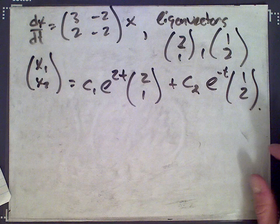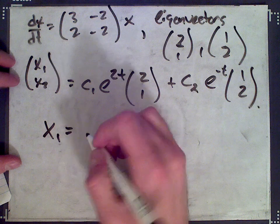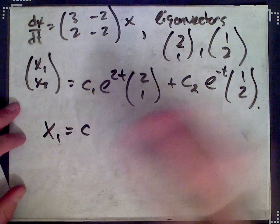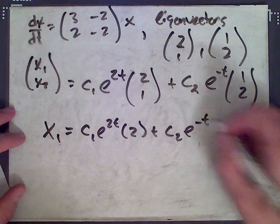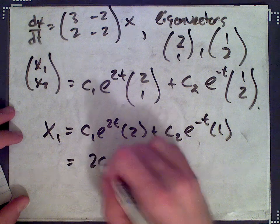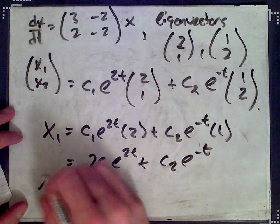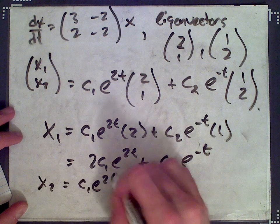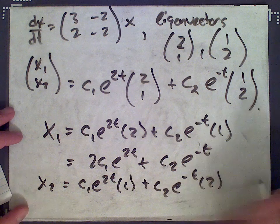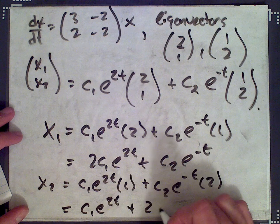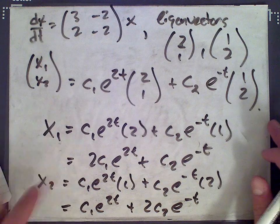Breaking the solution into components: x₁ = 2c₁e^(2t) + c₂e^(-t), and x₂ = c₁e^(2t) + 2c₂e^(-t). This shows what the solution actually means — x₁ and x₂ are each functions of t satisfying those two differential equations.